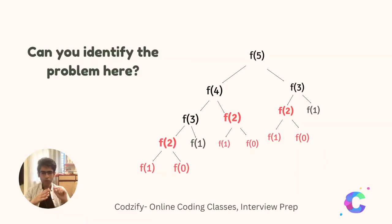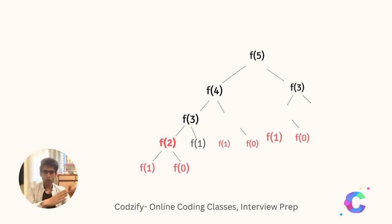Now can you identify the problem here? All the red functions are repeating again and again, and the sub-functions are also getting repeated. F of two is getting called for the first time, and again f of two is called a second time and for the third time.